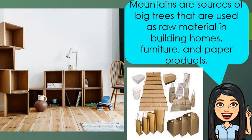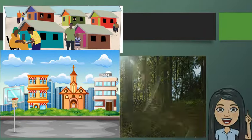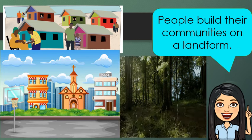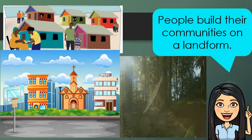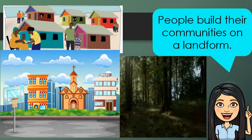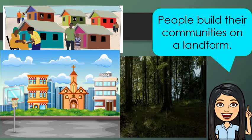Wood pulp is a watery substance of cellulose wood fibers. People build their communities on landforms — houses, parks, schools, and other infrastructures are built on land for relaxation, learning, and earning. Many means of transportation run on land. Forests are home to several animals such as tigers, lions, elephants, eagles, and many more.